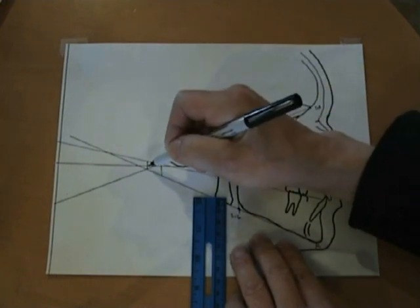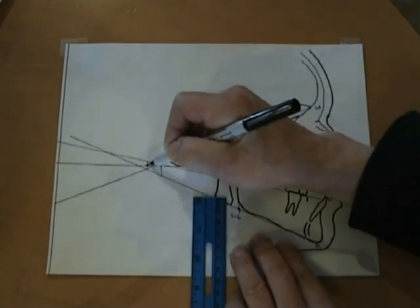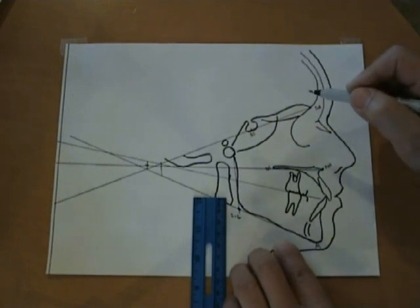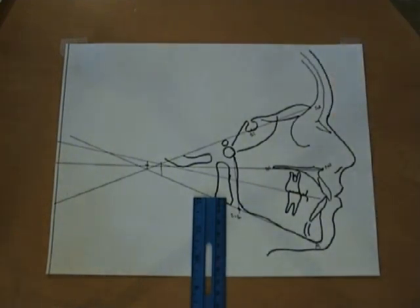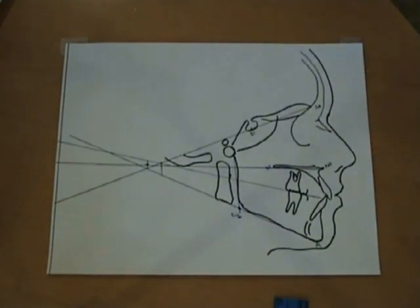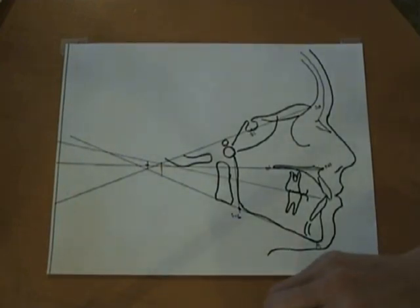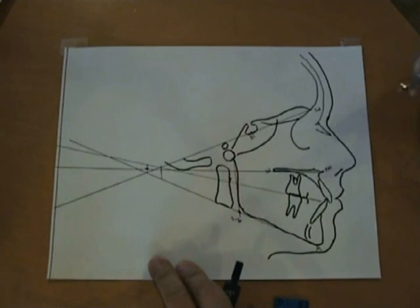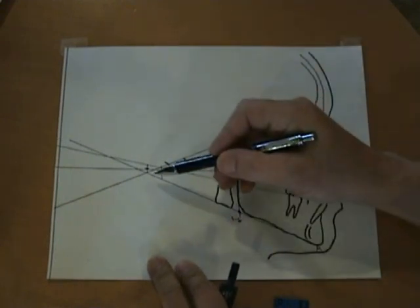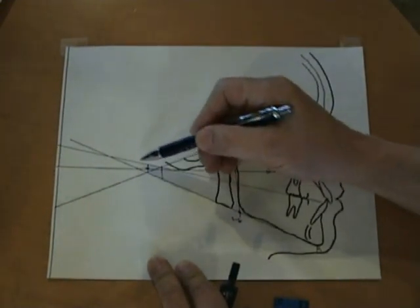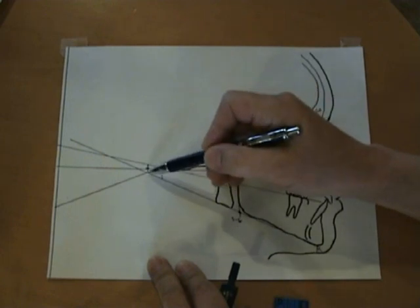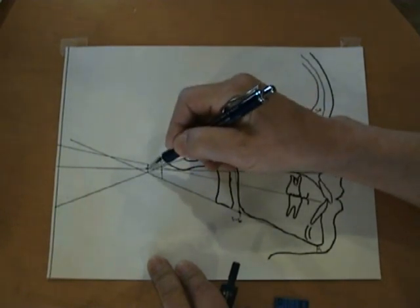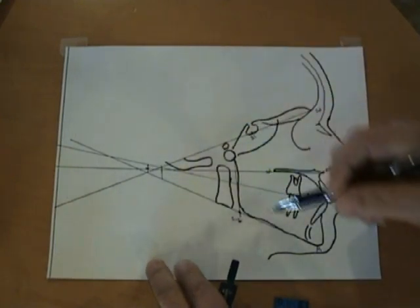So Center O is the midpoint of that vertical line. Let me repeat that, Center O is the shortest distance from the most superior plane to the most inferior plane. The shortest distance, and this is the midpoint right here, and that's considered Center O.